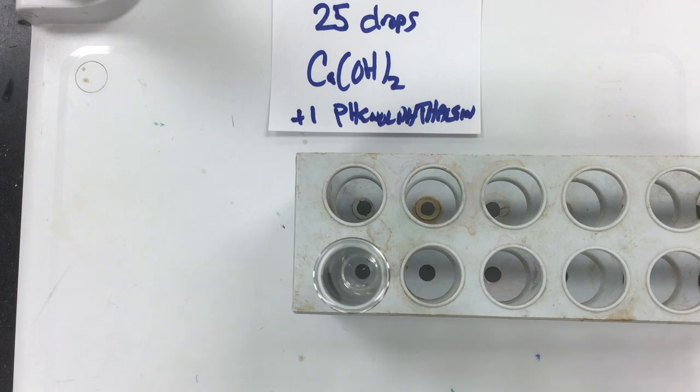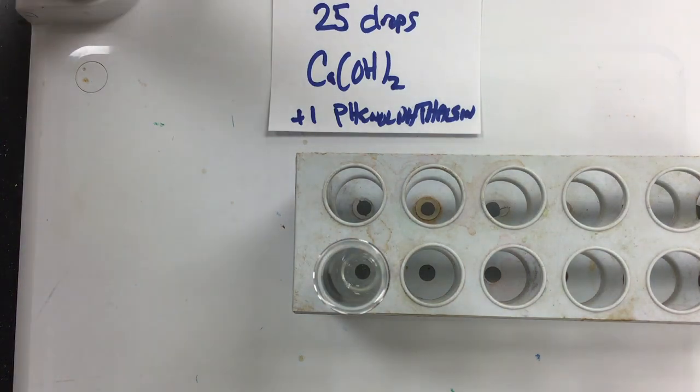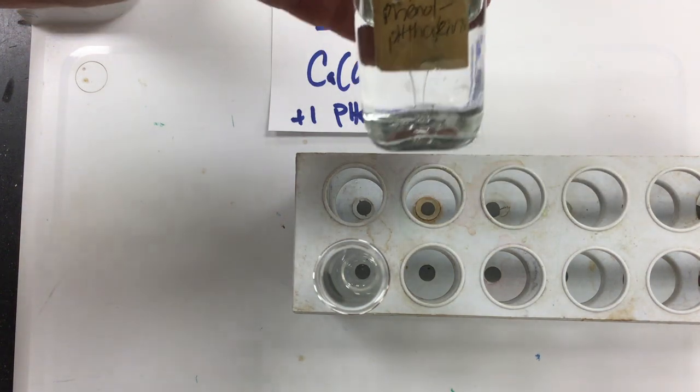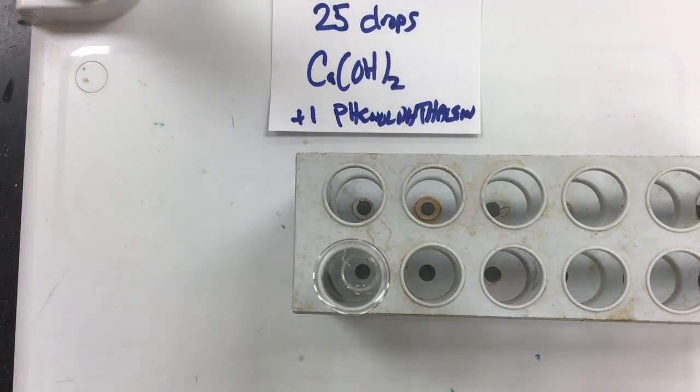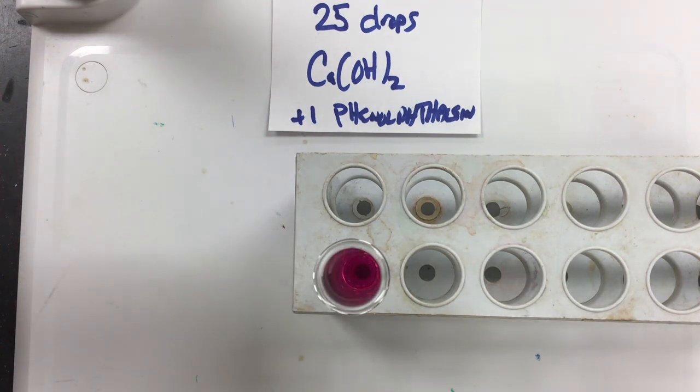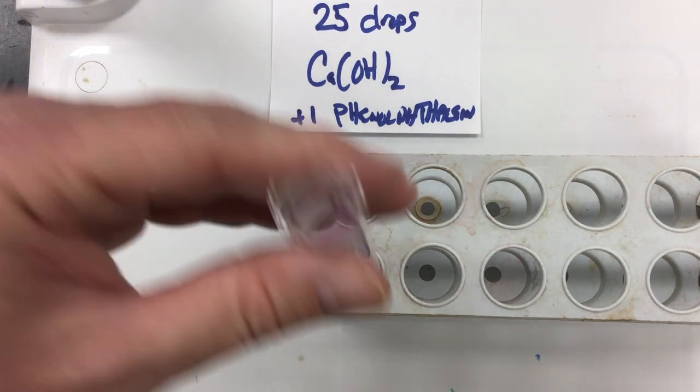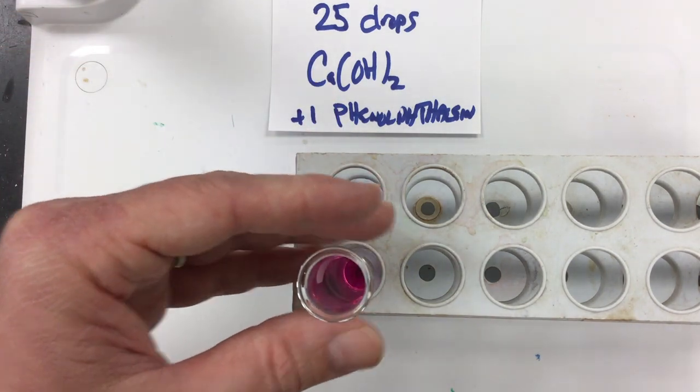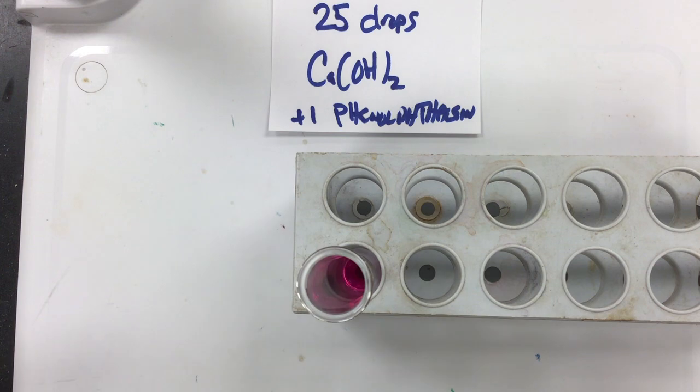And what I'm going to do is I'm going to verify that this stuff actually is basic by using phenolphthalein. Now if you remember, phenolphthalein here is an acid-base indicator. And maybe you remember what color phenolphthalein turns in a base. I'll give you a moment to make a prediction about that. So make a quick prediction. I'm going to add one drop of it in there. So if I add one drop of that, sure enough it turns pink.